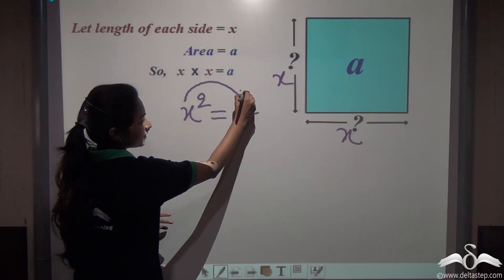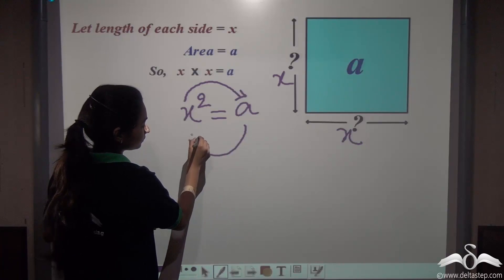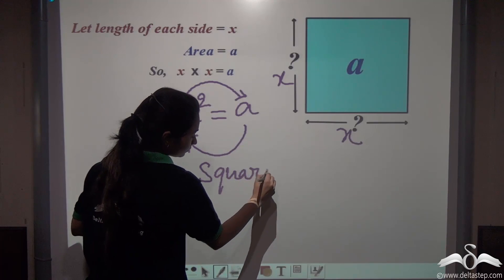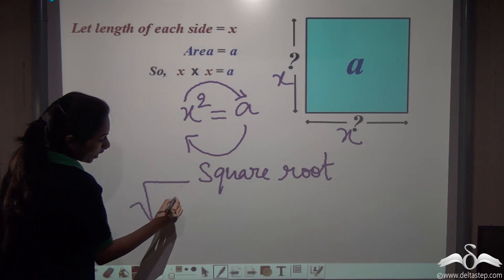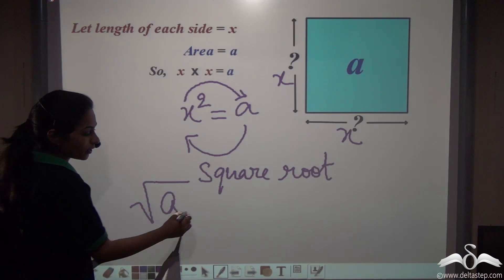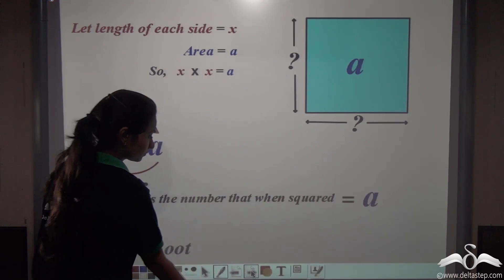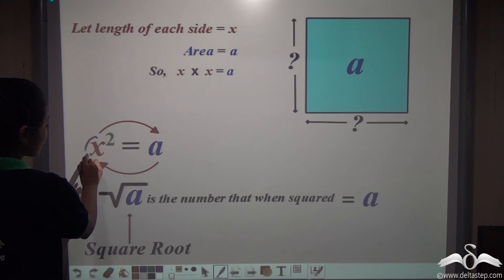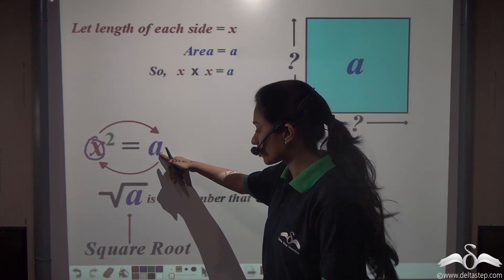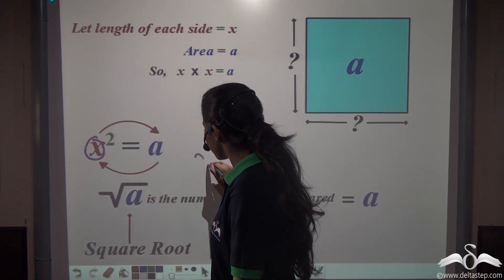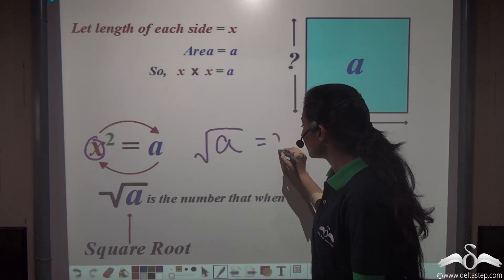I have squared x to get the area. Now the inverse operation would be square root. So if I find out the square root of a — that is the area of this square — I will get x, the length of each side of this square.